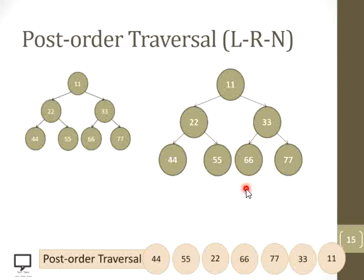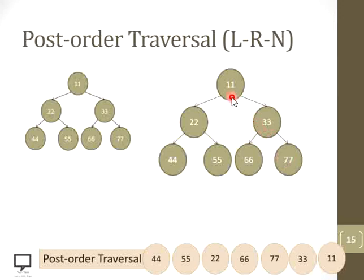In this way, we have traversed the given binary tree in post-order traversal. The post-order traversal result is: 44, 55, 22, 66, 77, 33, and finally the root node 11.